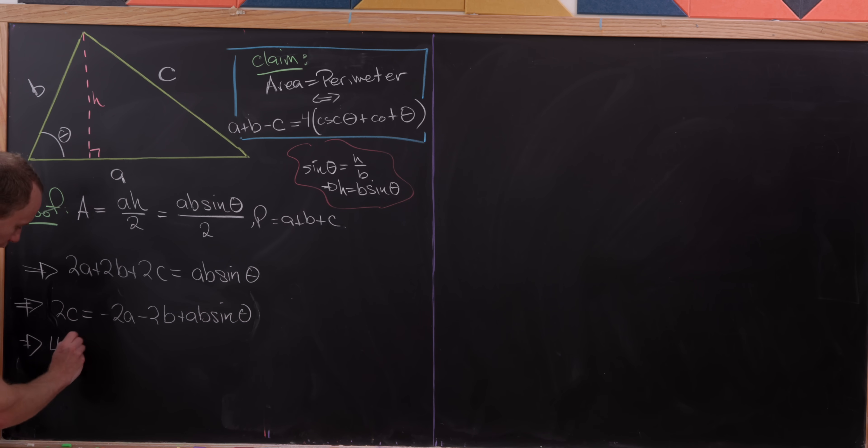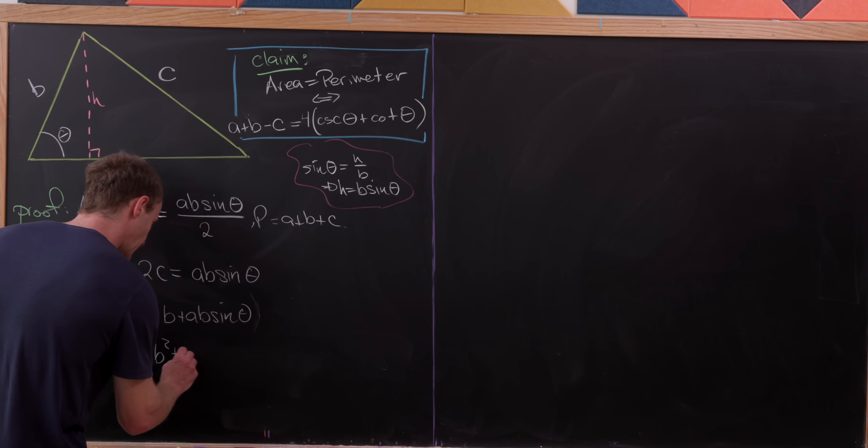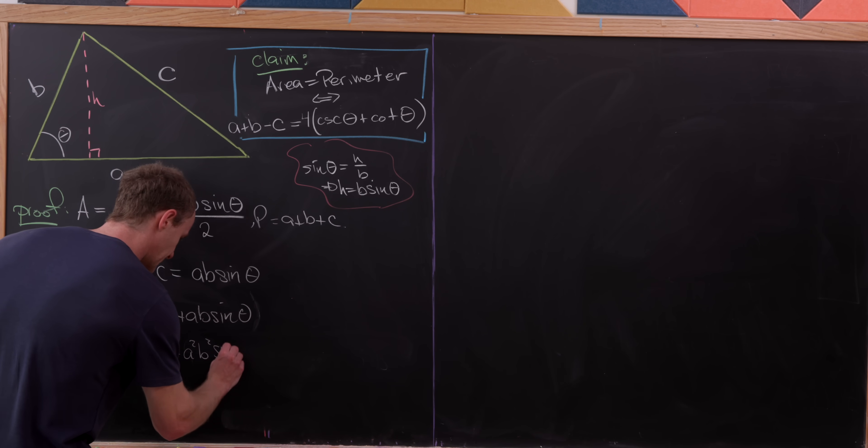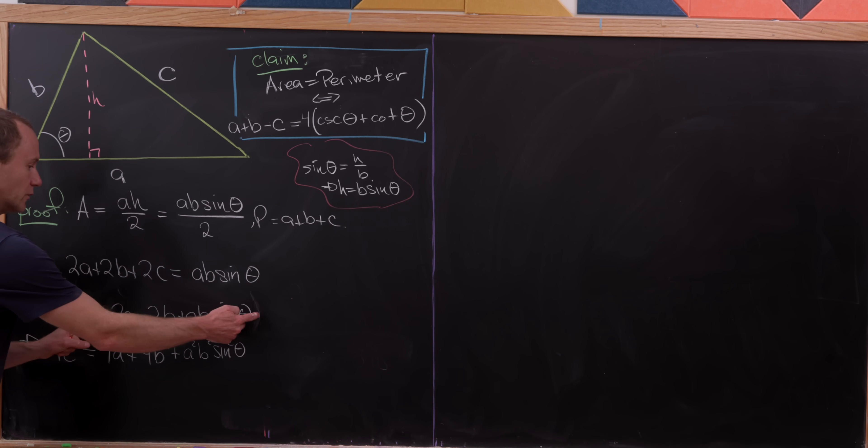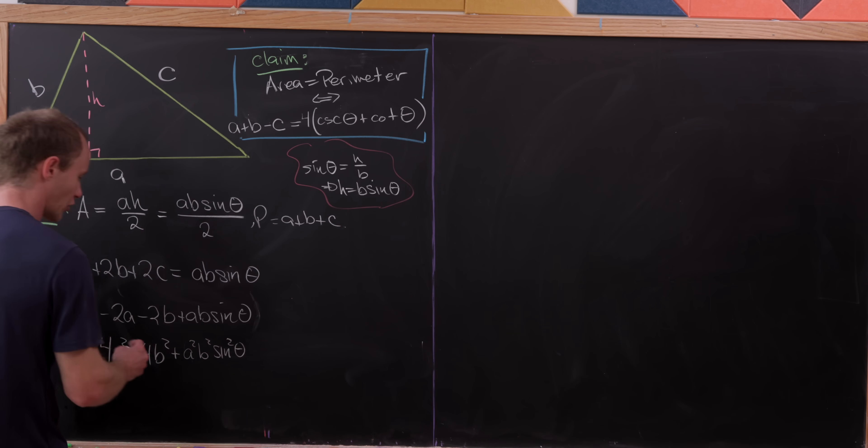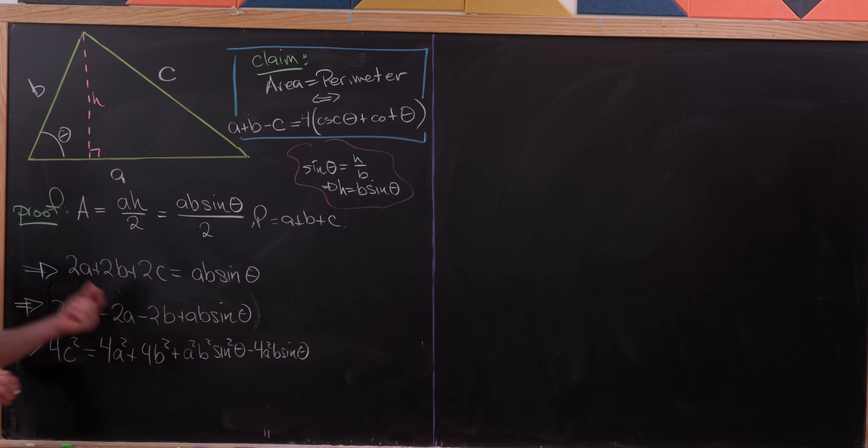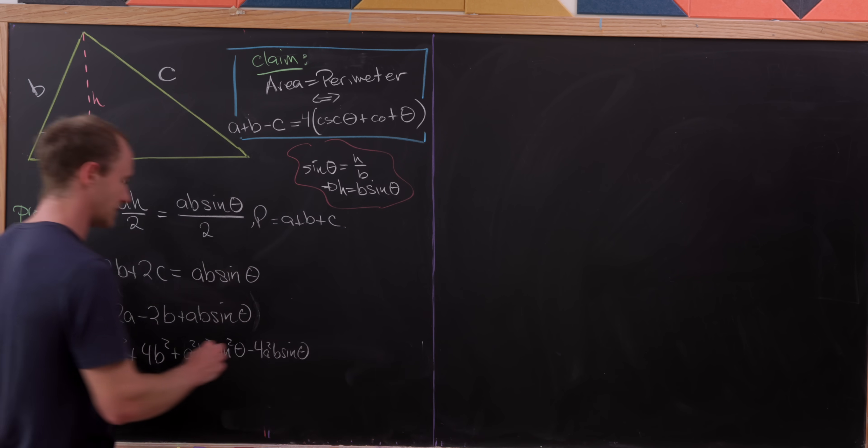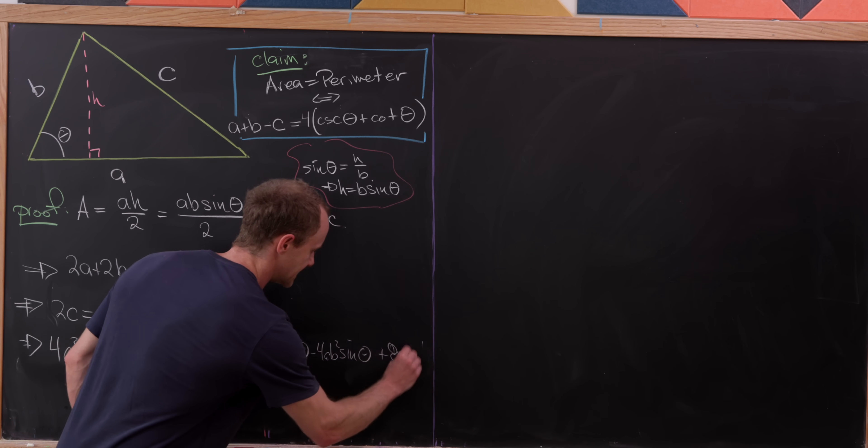So that's going to give me 4 times c squared equals 4 times a squared plus 4 times b squared plus a squared b squared sine squared theta. So those are all the pure terms in the distributive rule applied to this right hand side. And then we have the cross terms. So we'll have minus 4a squared b sine theta. That's from taking this minus 2a multiplying into this ab sine theta. We pick up two copies of that by the distributive rule. And then we get other similar things like minus 4ab squared sine theta, and then plus 8ab.